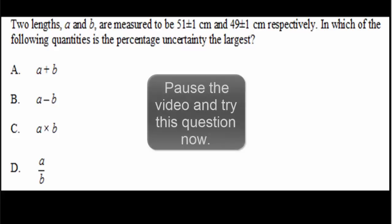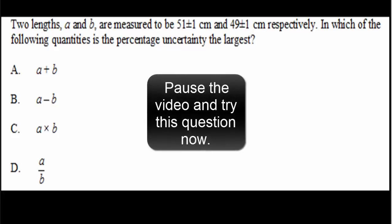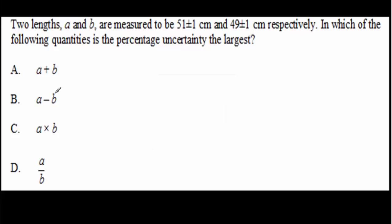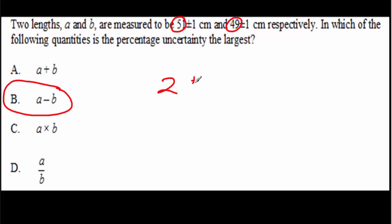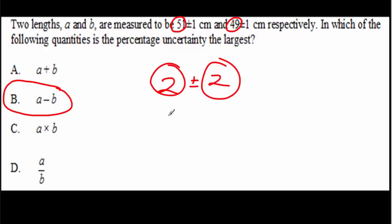One more IB multiple choice question — pause and try it yourself. The answer is B. When you subtract the two values, 51 minus 49 equals 2, a very small value. But you add the absolute uncertainties: 1 plus 1 equals 2. So your uncertainty is just as large as your value — much bigger than in any of the other three cases. And that's all for today. Thank you very much.